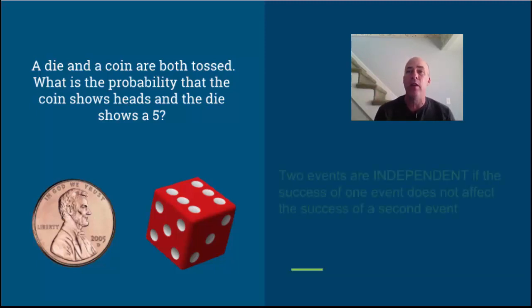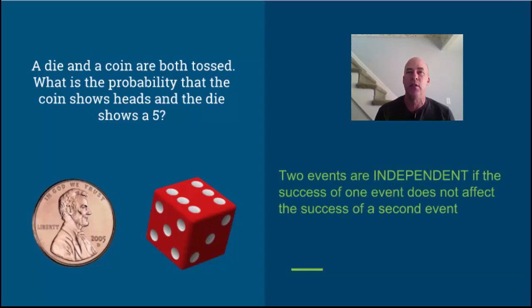The first thing we need to note is that these are called independent events. As far as I know, coins and dice don't talk to each other. They don't exert an influence on each other. Two events are independent if the success of one event does not affect the success of a second event. The fact that we get heads on the coin should have no influence on what happens with the die.